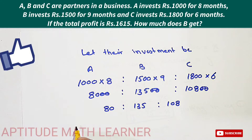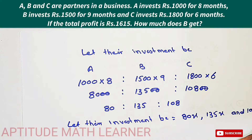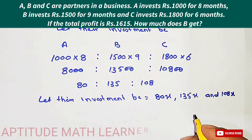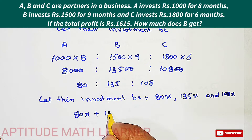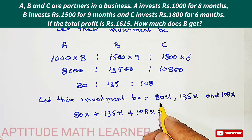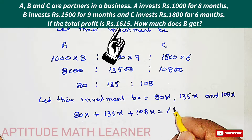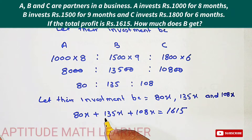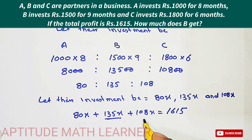Now the next thing we have to do is let their profit shares be 80x, 135x and 108x. This becomes 80x + 135x + 108x, and this equals the total profit. The total profit is rupees 1650. So we have to find the profit for B, which corresponds to 135x.